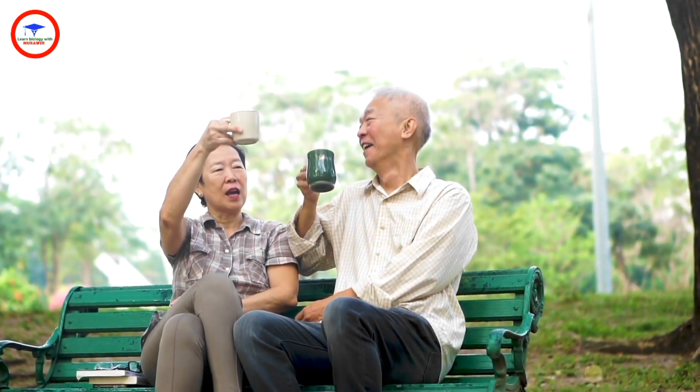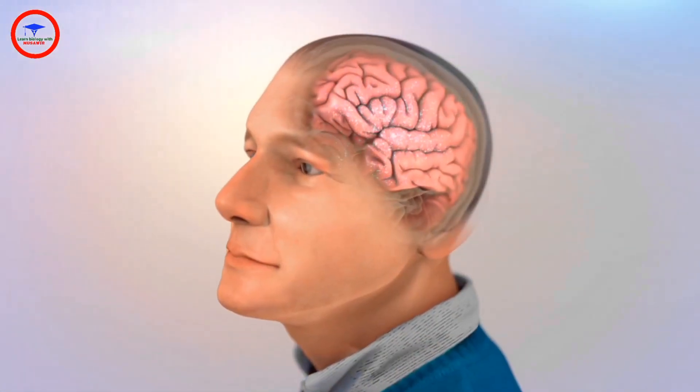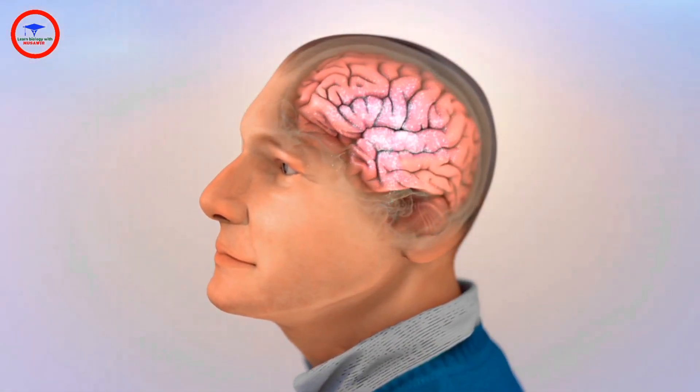In healthy people, all sensations, movements, thoughts, memories, and feelings are the result of signals that pass through billions of nerve cells or neurons in the brain.